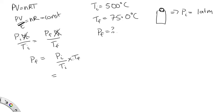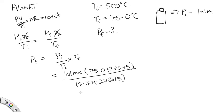Now, it's important when we're using this equation to, instead of using degrees C, we need to convert into kelvins. So this is 1 atmosphere times the final temperature, which is 75.0 plus 273.15, over the initial temperature, which is 5.00 degrees C plus 273.15.